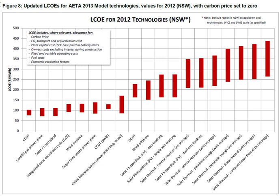The levelized cost of energy is a measure of a power source that allows comparison of different methods of electricity generation on a consistent basis. It is an economic assessment of the average total cost to build and operate a power-generating asset over its lifetime divided by the total energy output of the asset over that lifetime. The LCOE can also be regarded as the average minimum price at which electricity must be sold in order to break even over the lifetime of the project.